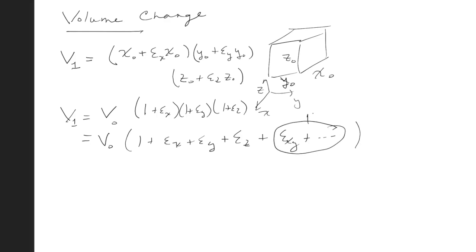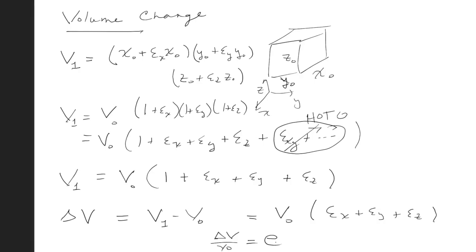We call these higher order terms, and we're going to assume that they go to zero for small deformations, leaving us with our final relationship for linear elasticity, which is just v naught times 1 plus epsilon x plus epsilon y plus epsilon z. The change in v is equal to v1 minus v naught, which is equal to v naught times epsilon x plus epsilon y plus epsilon z. Therefore, delta v over v naught, we call this the dilatation e, is nothing more than adding these three strains together. It's really just a measure of change in volume over initial volume.